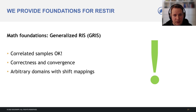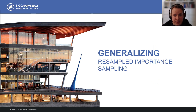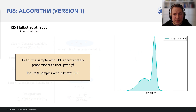This loses theoretical guarantees and led to all kinds of weirdness. Our generalized RIS supports correlations, and we give formulas for correctness and convergence. GRIS allows sample modification for reuse between arbitrary domains. We expect our foundations to provide a baseline for future work. Next we start with RIS and show how trying to reuse it naturally leads to GRIS. The goal is to generate one or more samples proportionally to a user-given target function, p-hat, defining the target PDF.